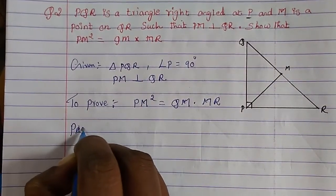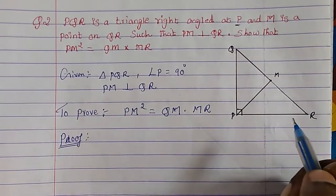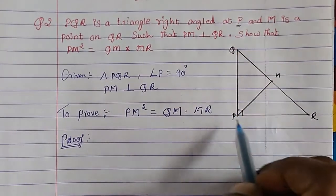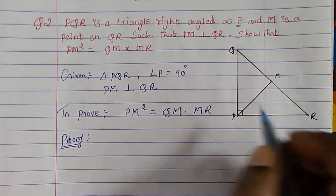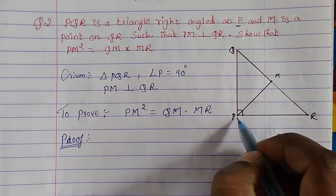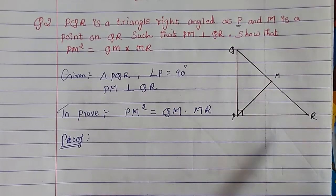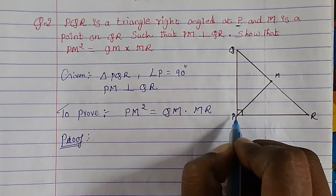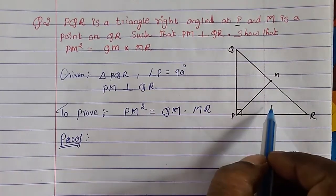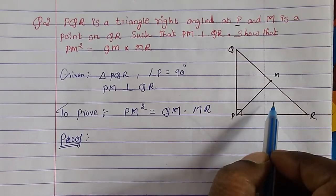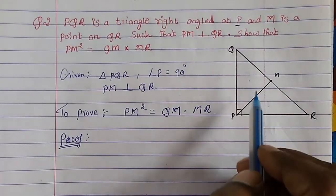We can make use of Theorem 6.7 because this is a right angled triangle. Theorem 6.7 says that in a right angled triangle, if you draw a perpendicular from the right angle to the hypotenuse, the triangles formed on both sides will be similar to each other. Here QR is the hypotenuse, so let's use that theorem.